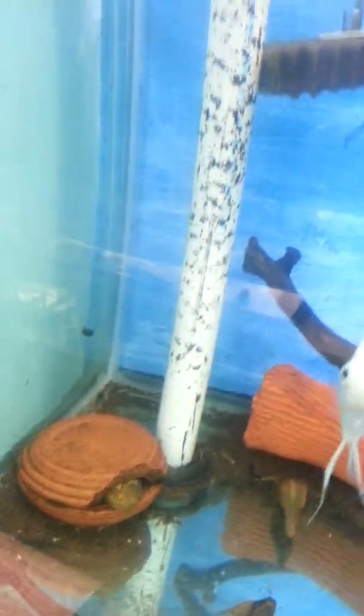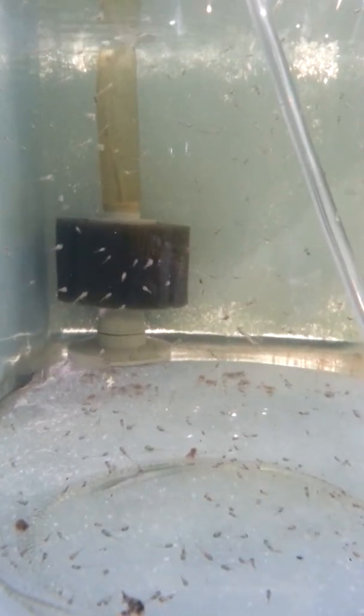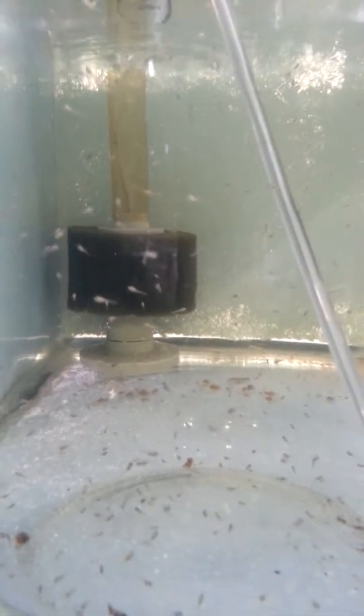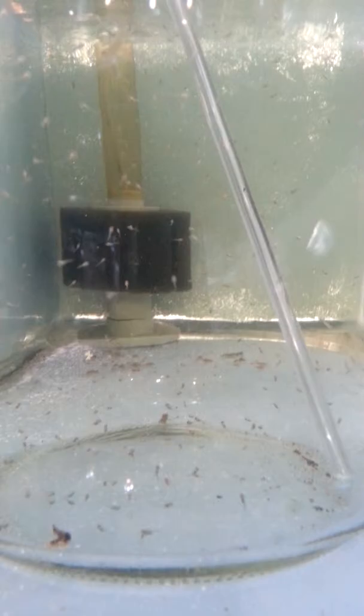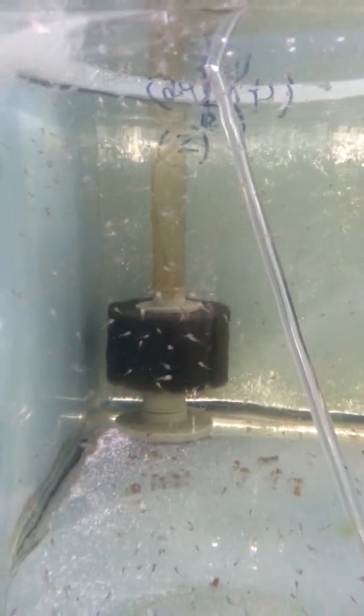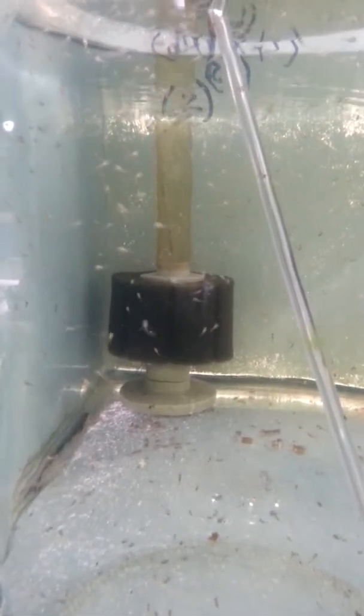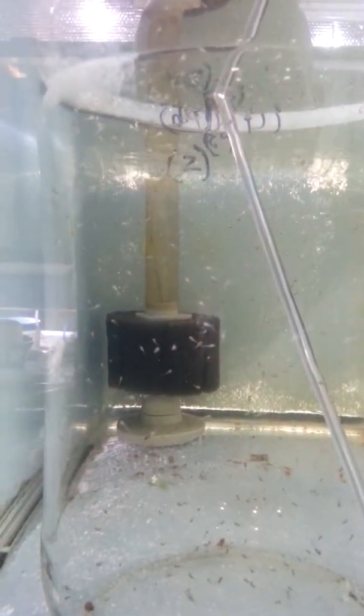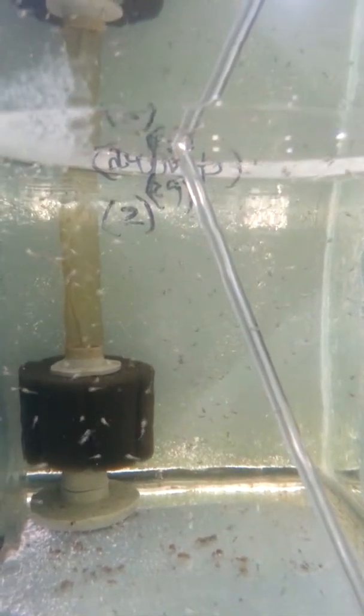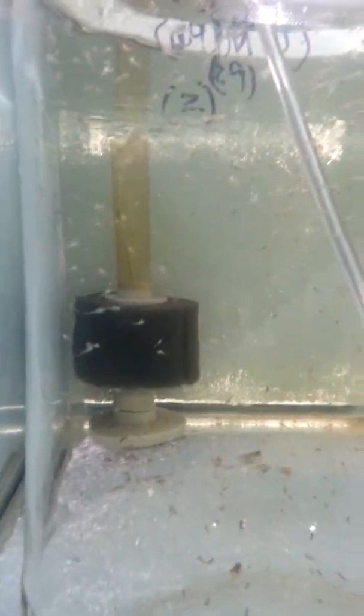Alright guys, I just put some brine shrimp in here with these angels, baby angels. I don't know if you can see them eating very well - they're darting all about trying to find them, trying to get at them. It's tough seeing them against that lighter background, but you get the hint. If you really look in there, you'll see them swimming around hunting.